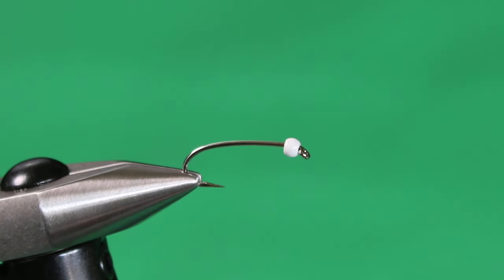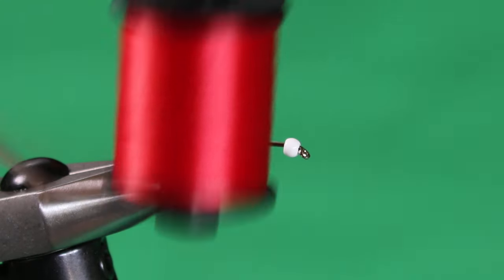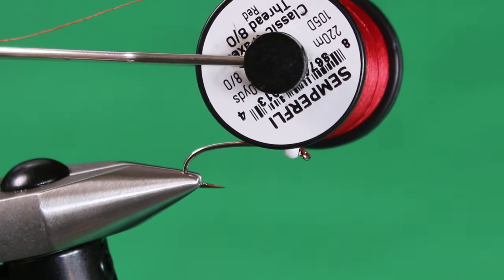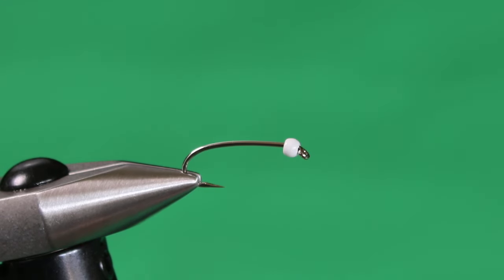So it's going to have a red butt on it. To tie that, we're going to use some of the Semperfli Classic waxed in red, 8/0. And for the bead, I've got a 7/64 white brass bead.